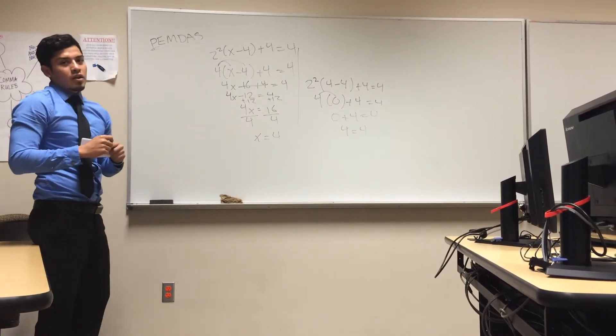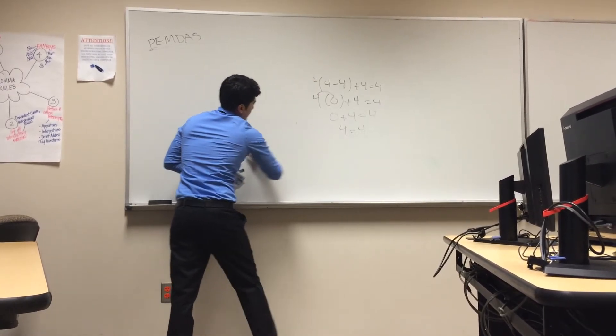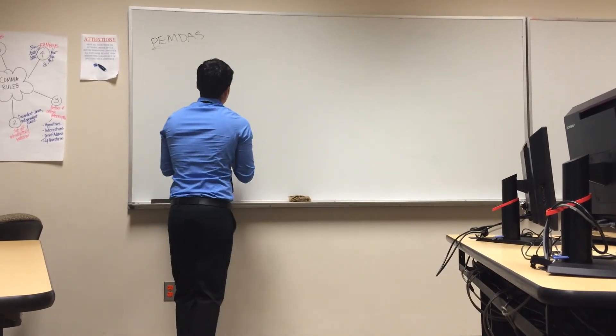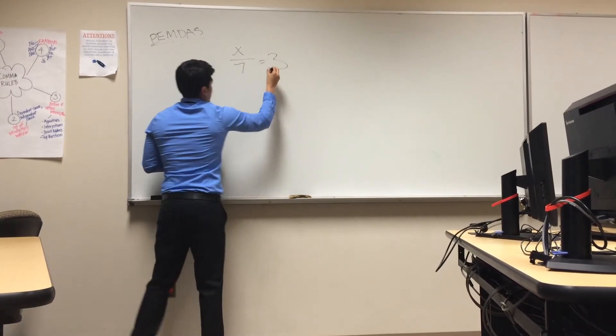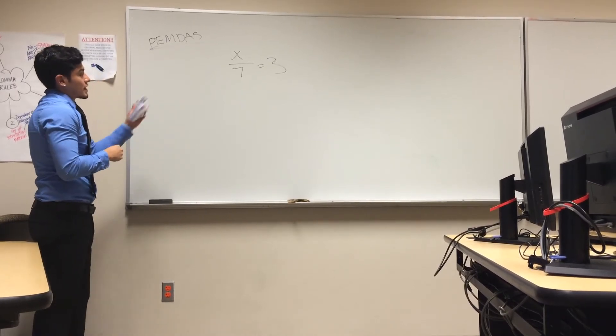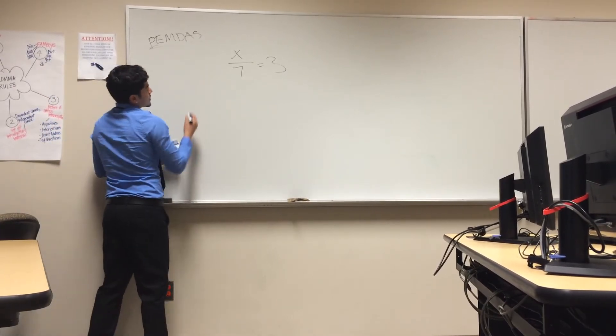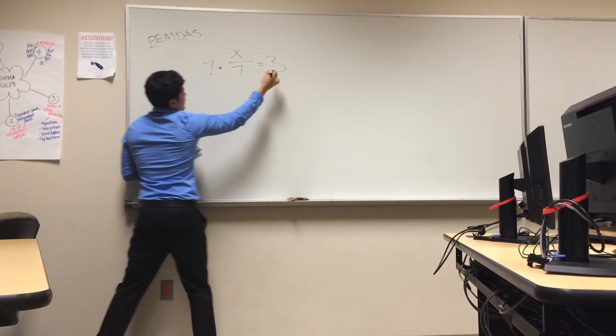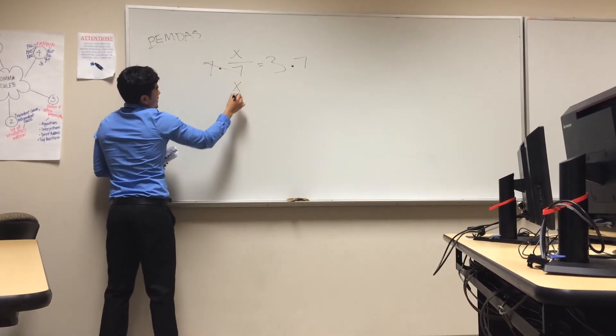Now, let's do one more fraction problem. For this problem, you have to isolate the x like any other problem. So, for this one you have to multiply 7 to both sides to get rid of the 7 at the bottom. That gets rid of the 7. The x stays by itself.